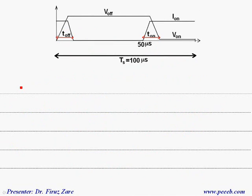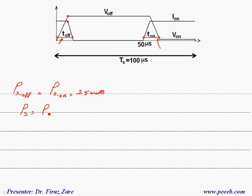Now we can find the switching loss for the turn-off state, which is basically the same as the turn-on switching loss because the switching time is the same. So the switching loss for the turn-off time is also 25 watts.